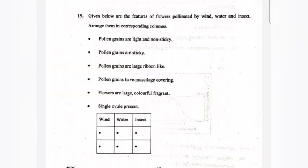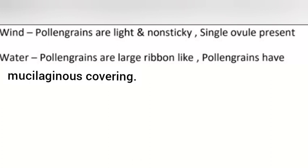Question 19: Given below are the features of flowers pollinated by wind, water and insect. Arrange them in the corresponding columns. Answer: Wind - pollen grains are light and non-sticky, single ovule present. Water - pollen grains are large ribbon-like.